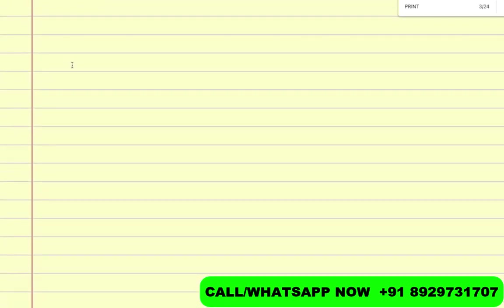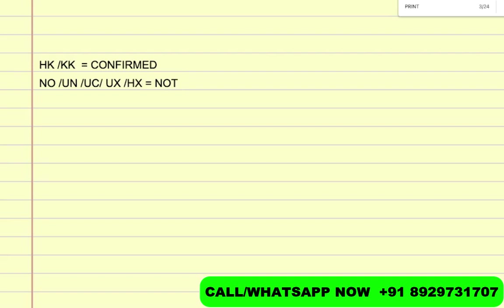Let me show you how these statuses look like. If you see an HK or KK it means it is confirmed. I'm just giving you a rough idea so that you won't have a problem understanding whether the service is confirmed or not. If you see NO, UN, UC, UX, or HX it means it is not confirmed — although all of these have a different meaning, but roughly they mean not confirmed. If you see HN, NN, or HL — you generally won't see HL here, you will see HN or NN — it means a request or pending.